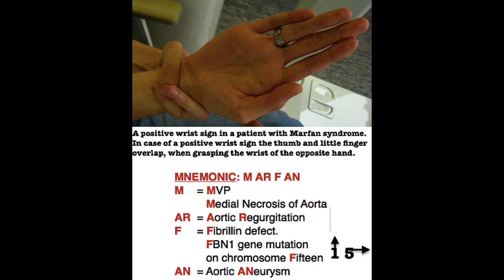The mnemonic to remember this is MARFAN: M stands for MVP and medial necrosis of the aorta, AR stands for aortic regurgitation, F stands for fibrillin defect and FBN1 gene mutation on chromosome 15, and AN stands for aortic aneurysm.